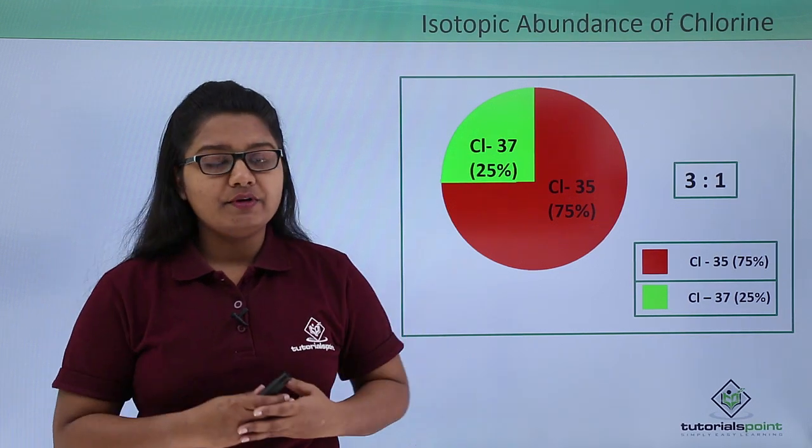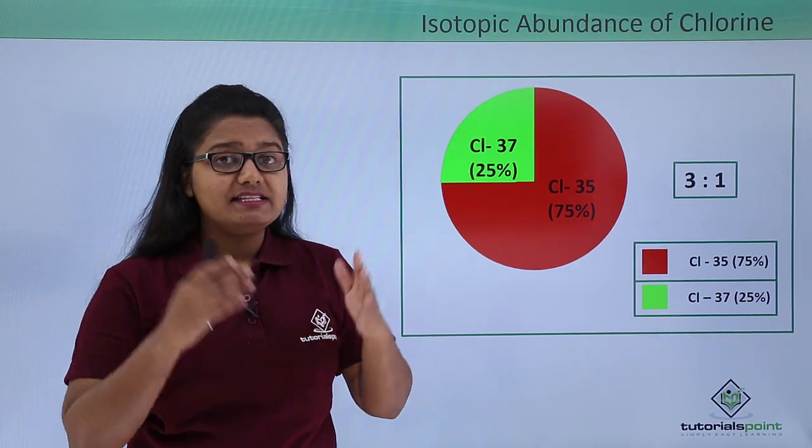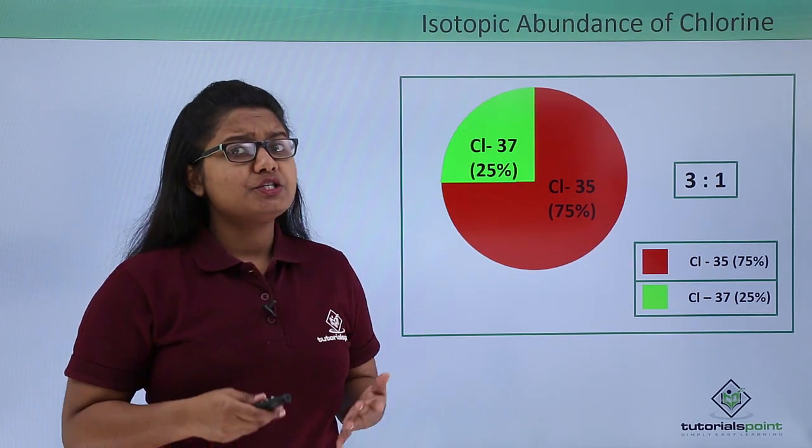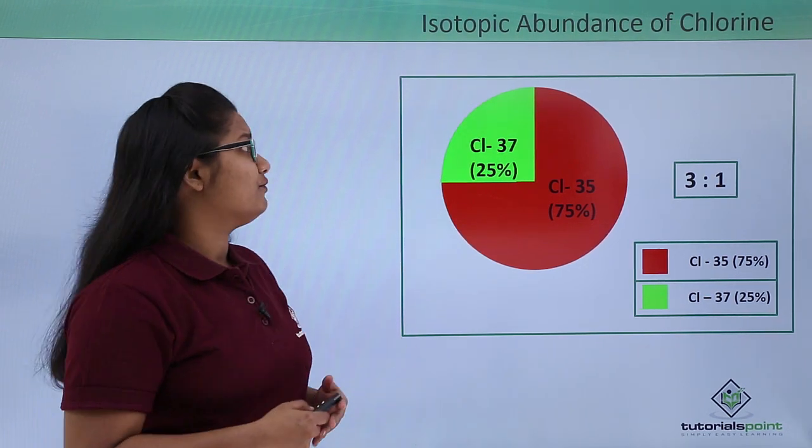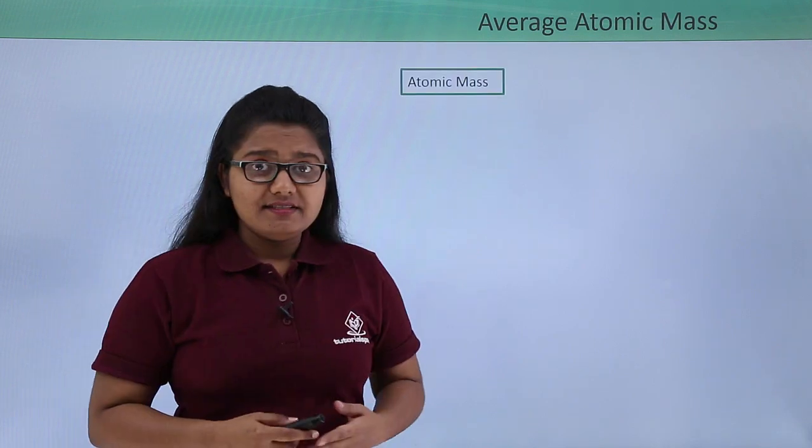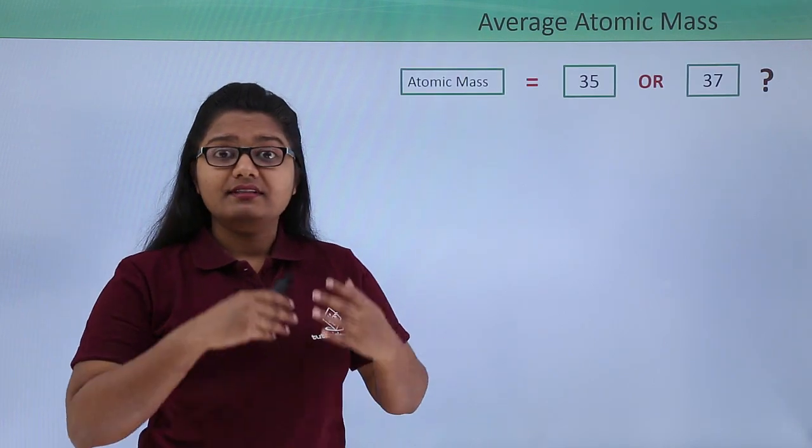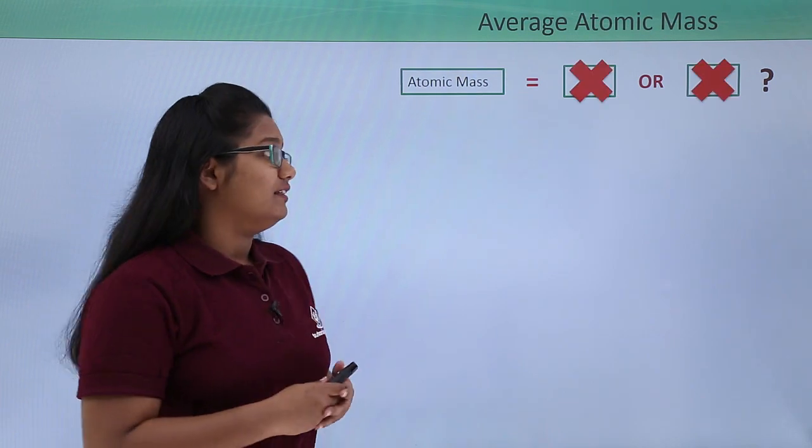These two isotopes of chlorine exist in nature as a mixture. Now here a question arises: what should we take as the atomic mass of chlorine?